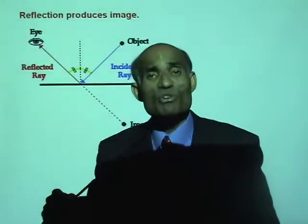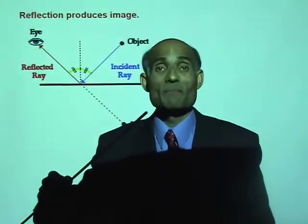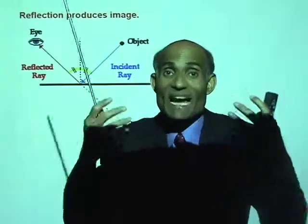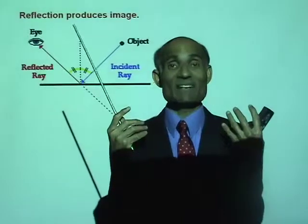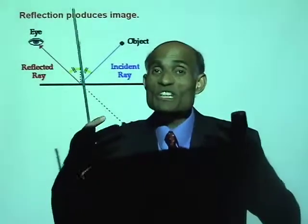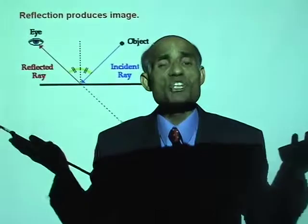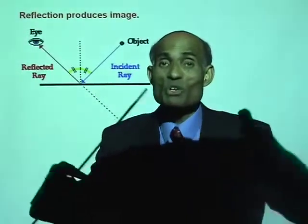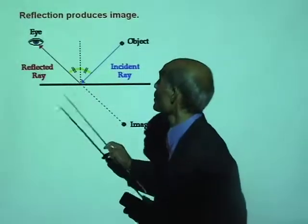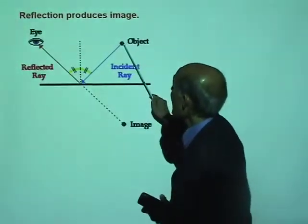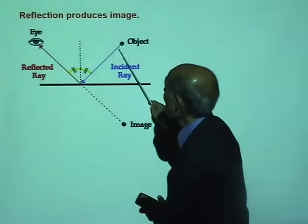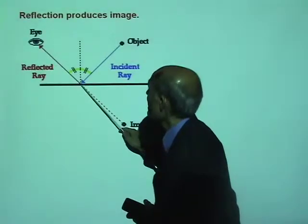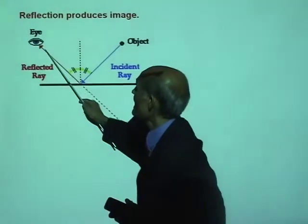You know that light travels in a straight line. A ray of light starts from the object and falls on the mirror and gets reflected like this. So if you look from there, it is the reflected ray that enters your eye. Your brain tells you that light travels in a straight line.